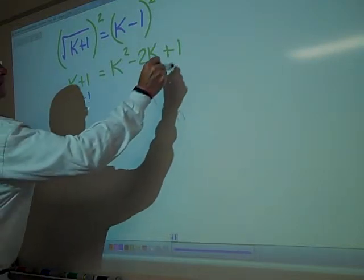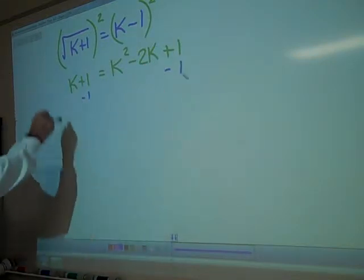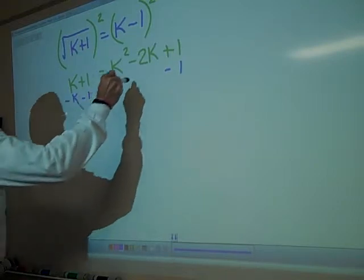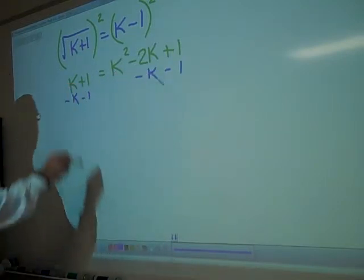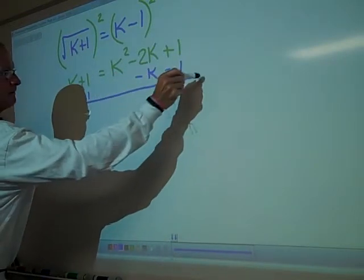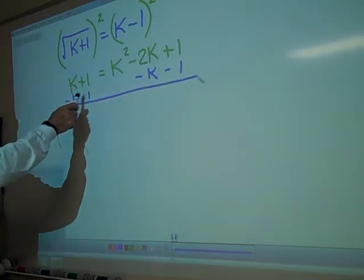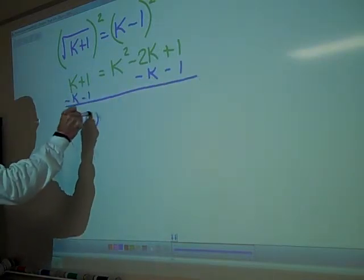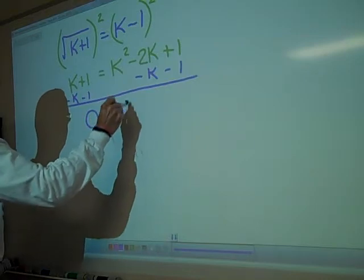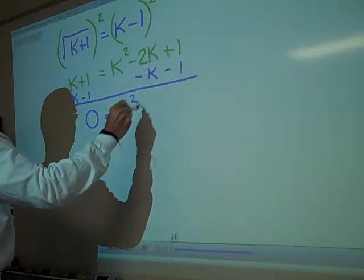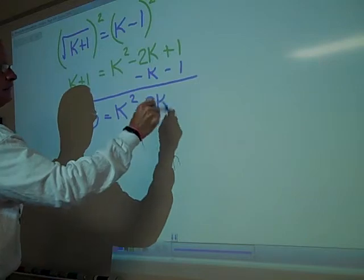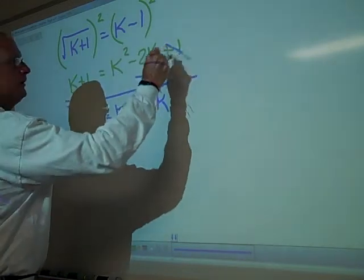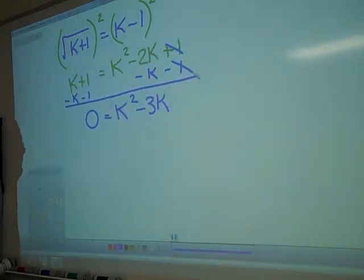Minus 1, minus 1, minus k, minus k. K plus 1, minus k minus 1. 0 equals k squared. Negative 2k minus 1k is negative 3k. 1 and negative 1 cross out. Now we need to foil this, correct?